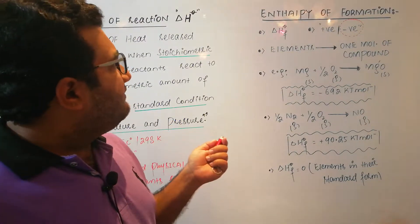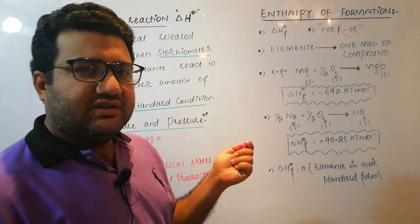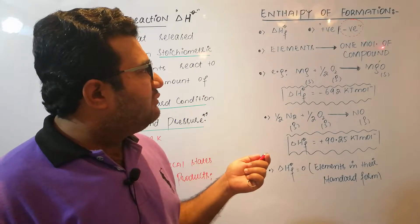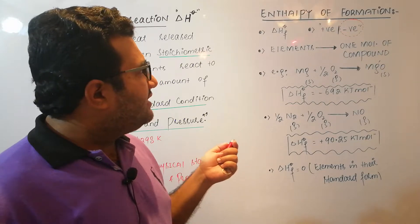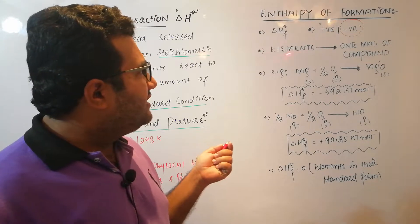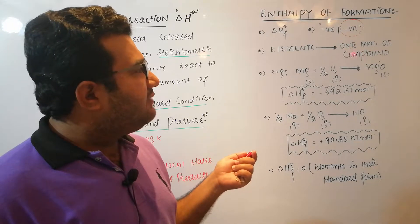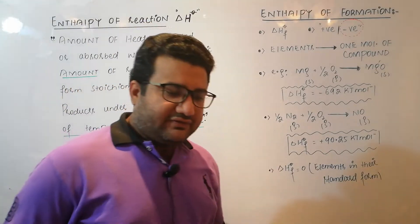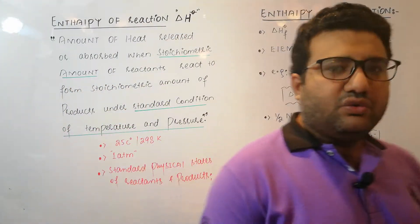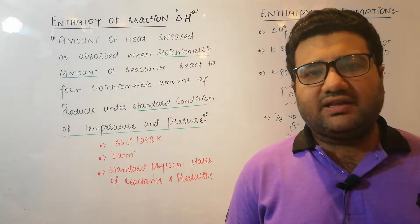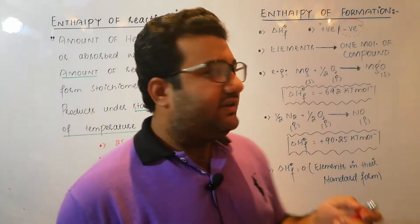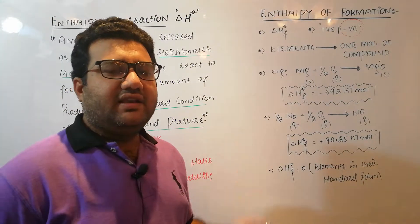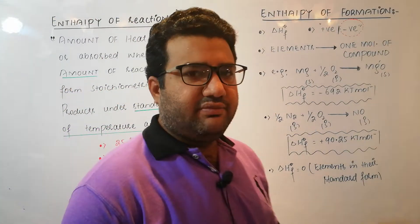When we specifically call the enthalpy of reaction the enthalpy of formation, it is the case when the elements react to form one mole of the compound. The condition is that the reactants must be elements and the product must be a compound of exactly one mole. If the elements do not react to form a compound, it cannot be called enthalpy of formation; and if two moles or half a mole is formed instead of one mole, it also cannot be called the standard enthalpy of formation.